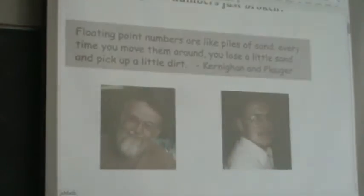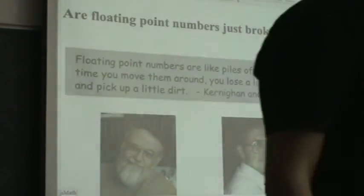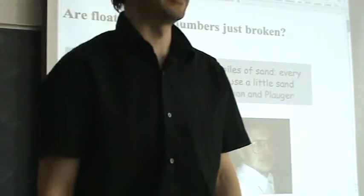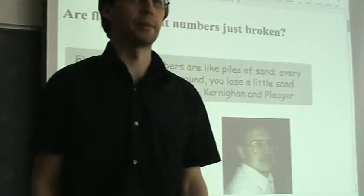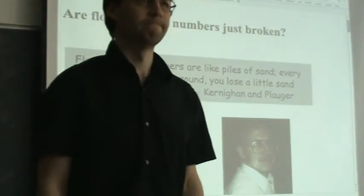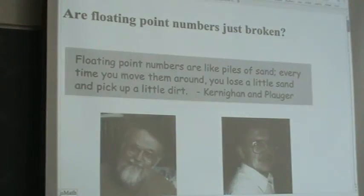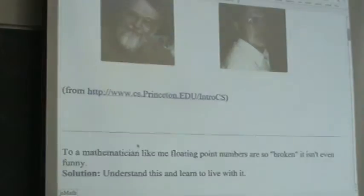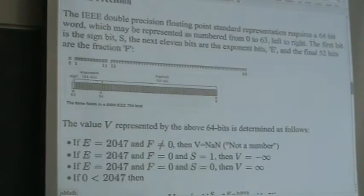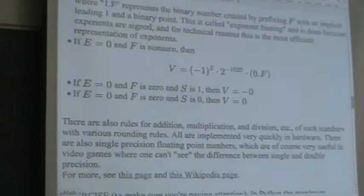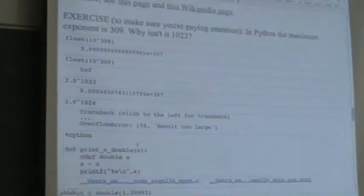Just a quick summary: floating point numbers are like piles of sand — every time you move them around you lose a little sand and pick up a little dirt. Interval arithmetic is another approach to computing with floating point numbers where you know how much dirt you have — a bound on how much error there is.